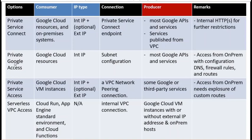For the second option, Private Google Access: it allows access from Google Cloud resources with only an internal IP address. This uses the subnet configuration where your resource is hosted. From the producer side, it allows access to most Google APIs and services. One remark: access from on-prem is also possible with configuration of DNS, firewall rules, and routers — not via subnet configuration.